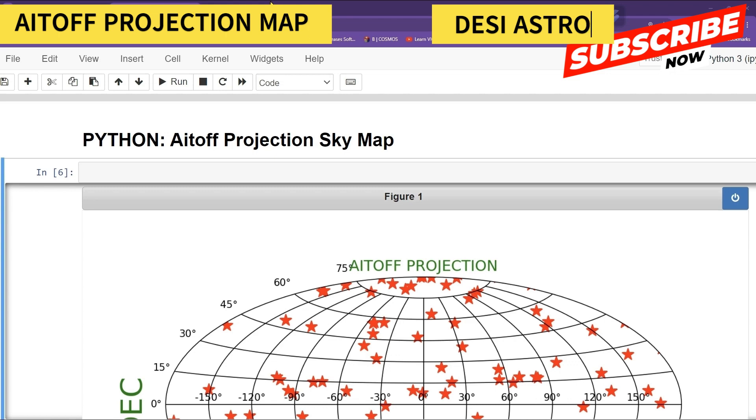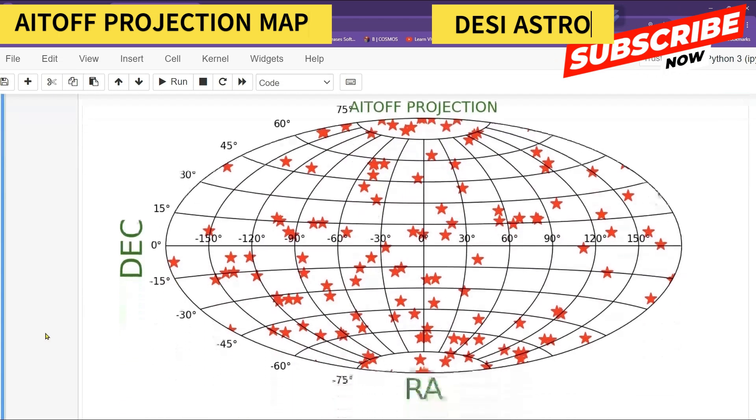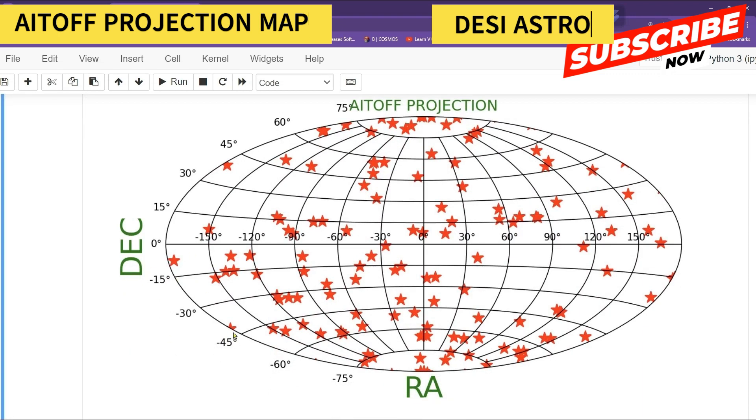Your Aitoff projection map in which suppose an object has a position as RA and DEC, such as your XY position.